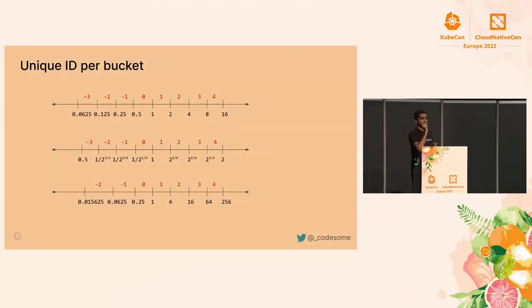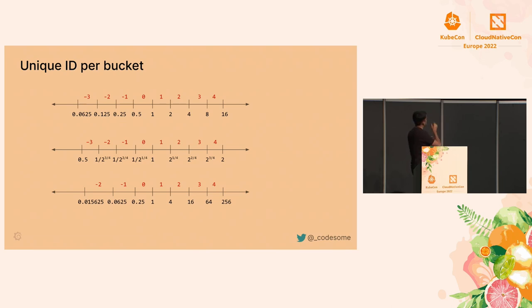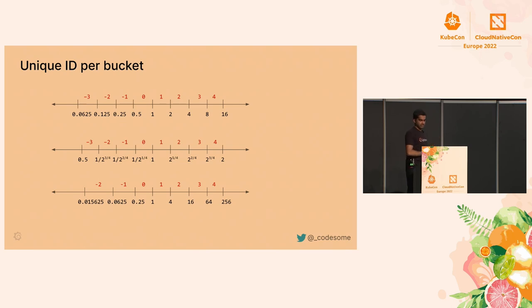We assign ID zero to the bucket whose upper boundary is 1. Each new bucket going up gets IDs 1, 2, 3, 4, and in the decreasing direction we use negative IDs. This gives us all the information we need to describe any histogram's bucket layout efficiently.